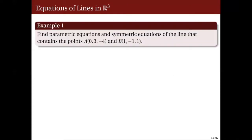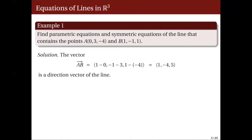Let us consider the first example. Given two points a and b, we want to find parametric equations and symmetric equations of the line containing these two points. We need a point on the line and a direction vector. We can form the vector from a to b, which has components equal to the coordinates of b minus the coordinates of a. That simplifies to the vector 1, negative 4, 5, which defines the direction of the line.